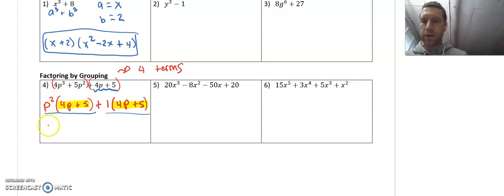I only pulled out one time, I don't write it squared, right? They have a common factor of 4p plus 5 to the first power, so I'm only going to pull out 4p plus 5 to the first power. And then I'm left with p squared plus 1.